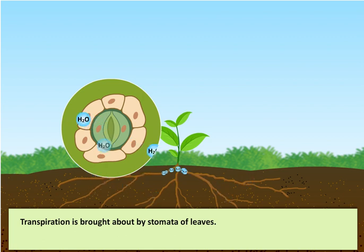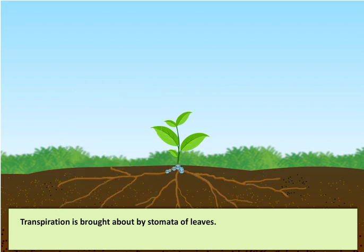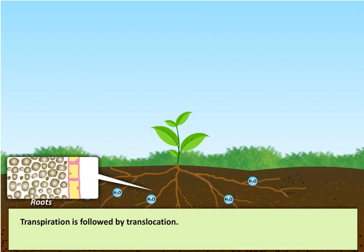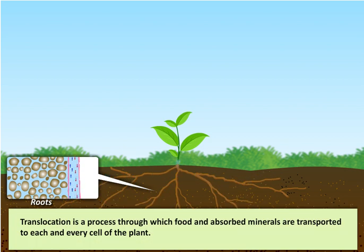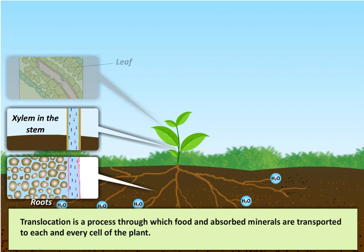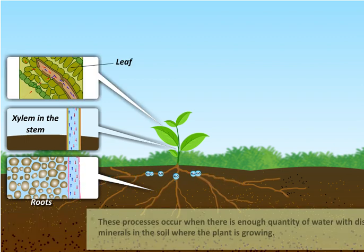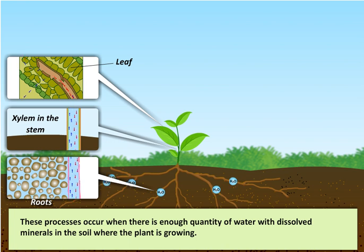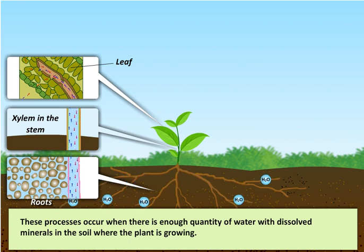Transpiration is brought about by stomata of leaves. Transpiration is followed by translocation. Translocation is a process through which food and absorbed minerals are transported to each and every cell of the plant. These processes occur when there is enough quantity of water with dissolved minerals in the soil where the plant is growing.